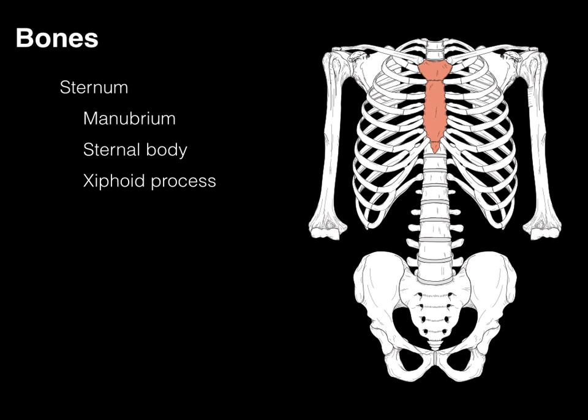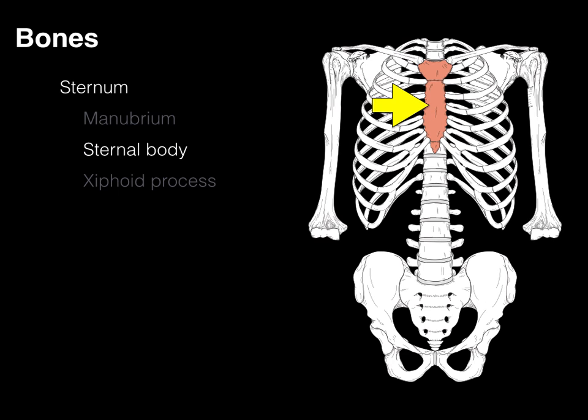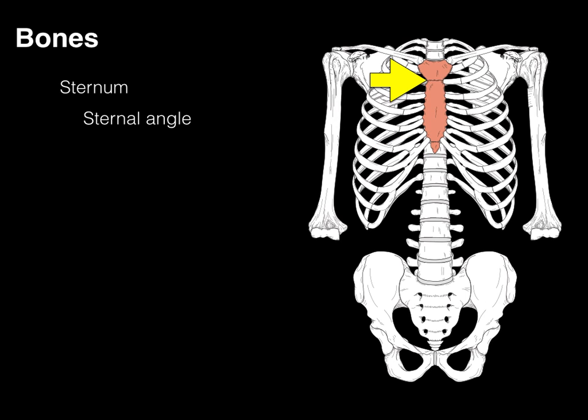The sternum — the breastbone — is derived from lateral plate mesoderm and is comprised of the manubrium, sternal body, and xiphoid process. The xiphoid process is the pointy end at the very bottom. The sternal angle is found between the manubrium and sternal body, and will be an important radiographic and clinical landmark as we talk about the mediastinum next week. And that's our thoracic wall.